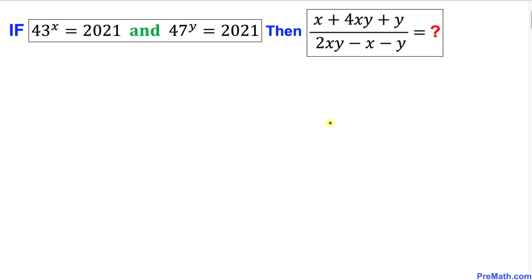Welcome to pre-math. In this video tutorial we have this 'if and then' problem. If 43 to the power x equals 2021 and 47 to the power y equals 2021 as well, then we are going to find the value of the rational expression: x plus 4xy plus y, all divided by 2xy minus x minus y.